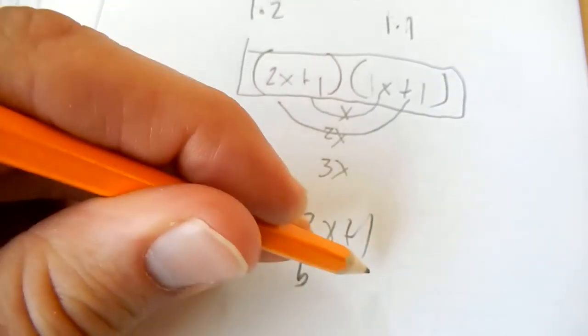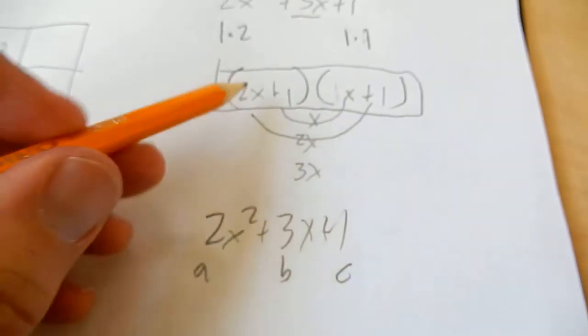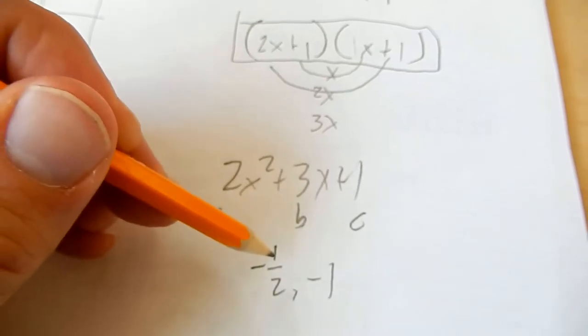Where a is 2, b is 3, c is 1, you'll get these answers: negative 1 half and negative 1.